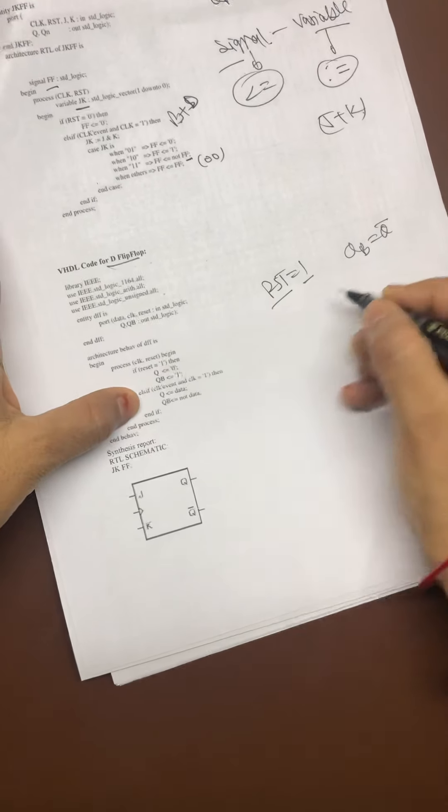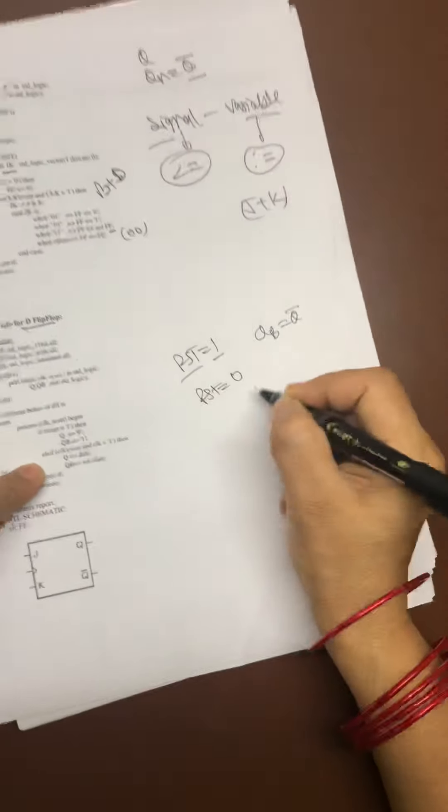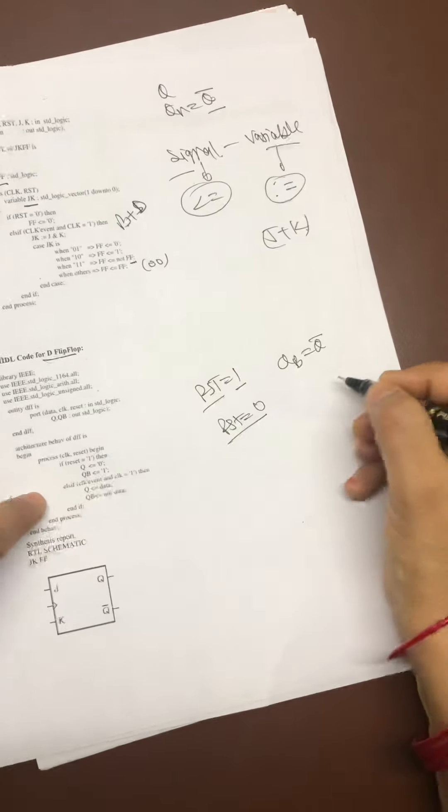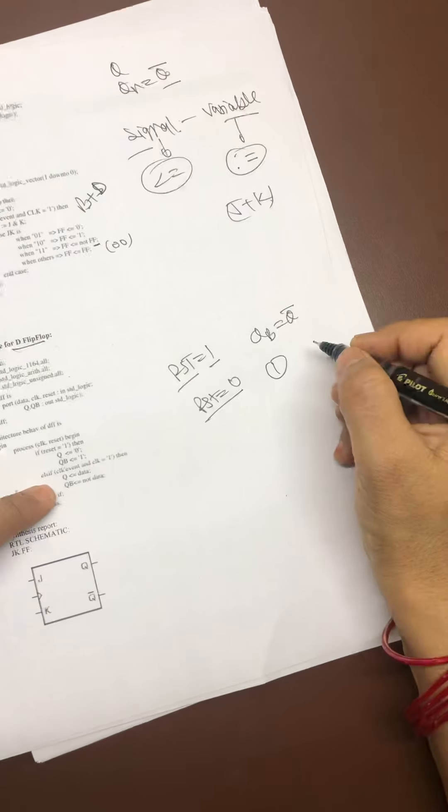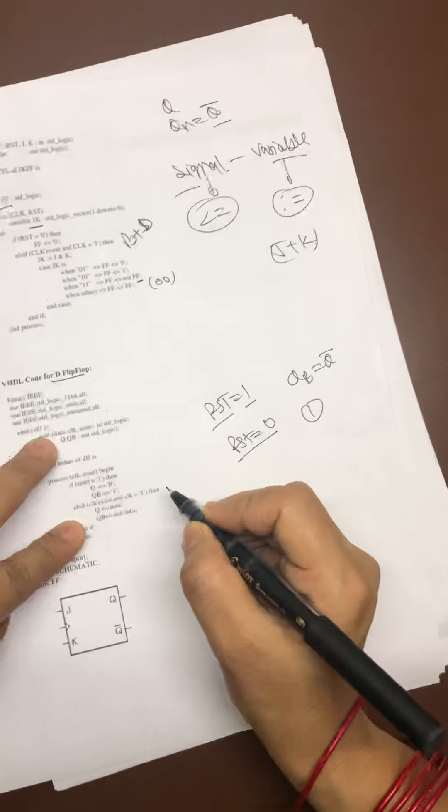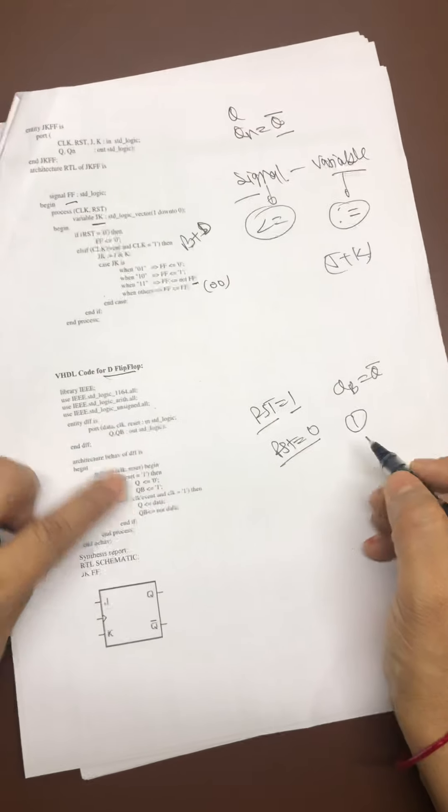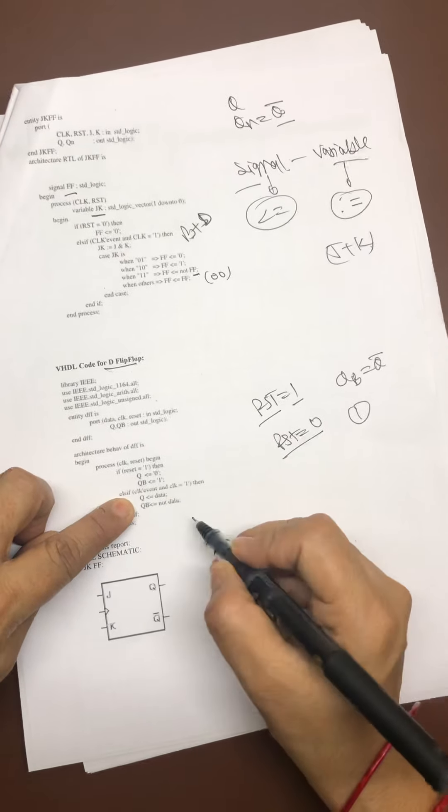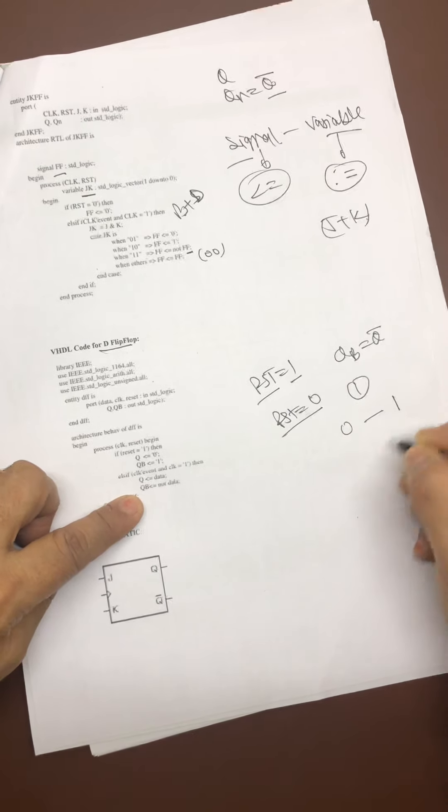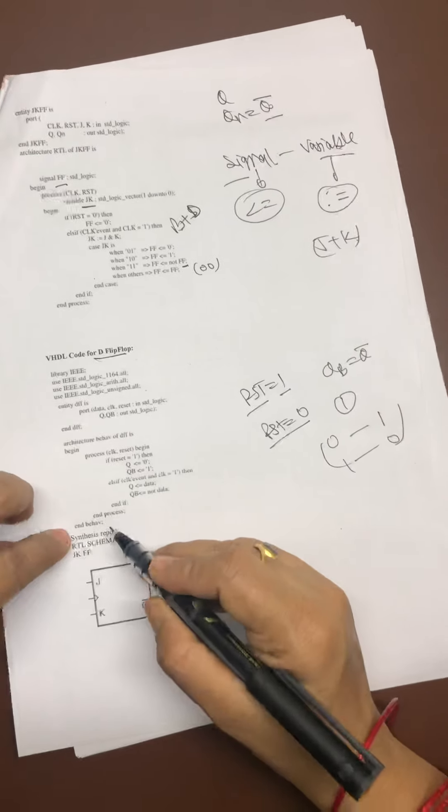Else if clock tick and clock is going to be 1. It means my reset is now become 0. Else if, and clock tick even and clock is going to be 1. So what it must be there? Q should be assigned to data. Data is my input means and QB is assigned to not of data. Means whatever is my input it goes to Q and whatever is not of D. Not of D means 0 hoga to kya hojayega? 1 and 1 hoga to 0. Then end if and process and end be able.